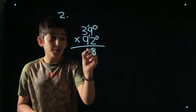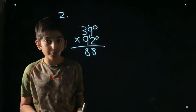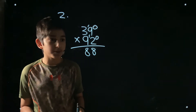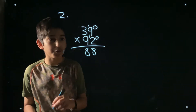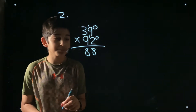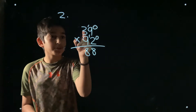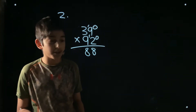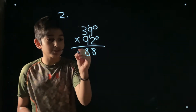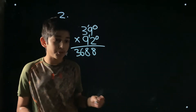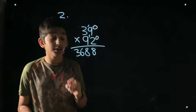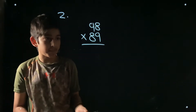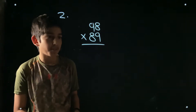This might seem hard, but knowing your math facts makes it much easier. Now carry forward 8 for position two: 9 times 3 is 27, plus the carry of 8 is 35. So the answer to 39 times 92 is 3588.